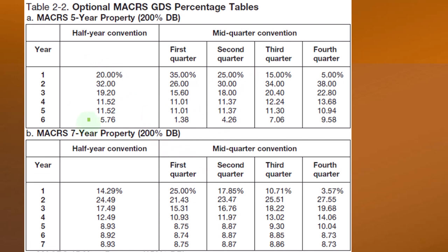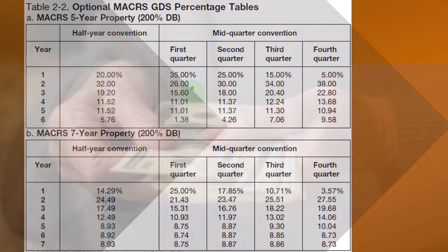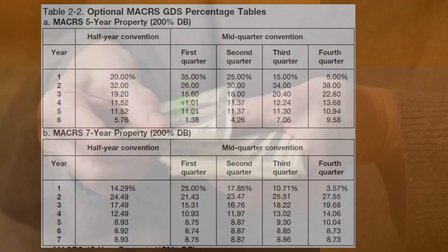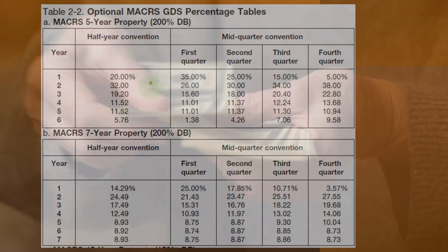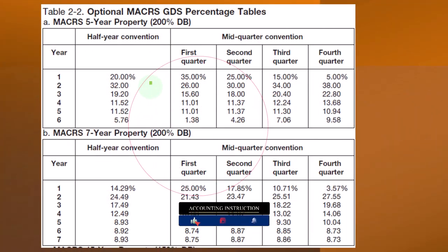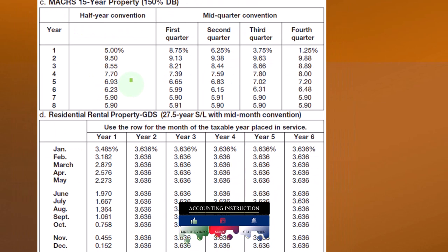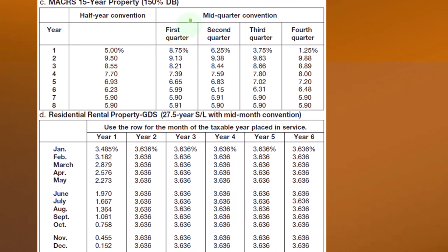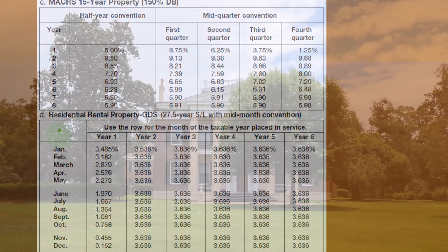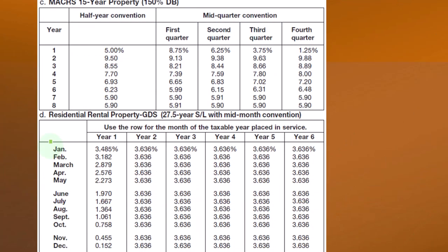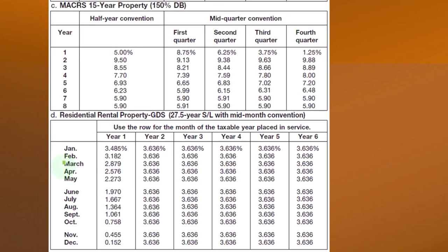Once you choose the right table, it becomes much easier — just take your original cost or basis and multiply it by the percentage, rather than calculating the adjusted basis each year and then multiplying by the double-declining rate and checking against straight-line. These tables are quite useful for projecting out into the future. For 15-year property it's the same process. Residential real property is more involved because the mid-month convention means you could have placed it in service in any of 12 months, requiring 12 separate sets of percentages.